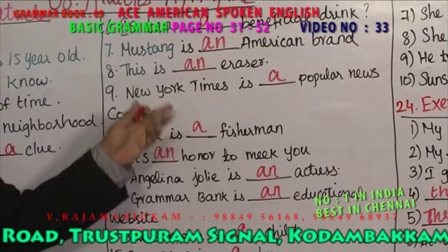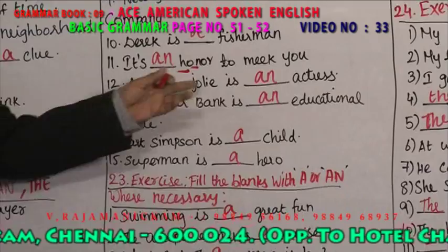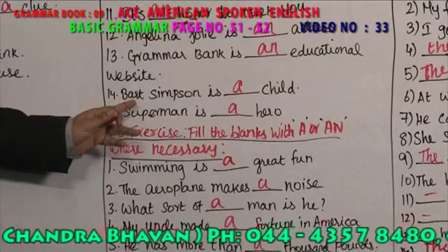'An honor' — it starts with H but the pronunciation is the vowel sound O, so you say 'an honor to meet you.' Angelina Jolie is an actress — a world-famous actress. Grammar Bank is an educational website — an educational website. Bart Simpson is a child. Superman is a hero.